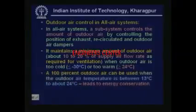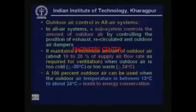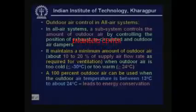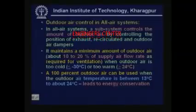However, the amount of outdoor air can be increased progressively as the outdoor air temperature increases from minus 30 degrees centigrade to about 13 degrees centigrade. And you can maintain 100 percent outdoor air when the outdoor air temperature is between 13 degrees and about 24 degrees centigrade. So when the temperature is less than minus 30 or greater than plus 24, you provide a minimum amount of outdoor air. When it is between minus 30 and plus 13, you progressively increase the outdoor air. When it is between 13 and 24 degrees centigrade, you supply all outdoor air for conditioning the space.